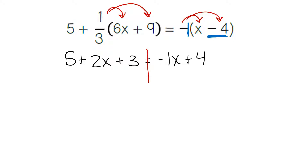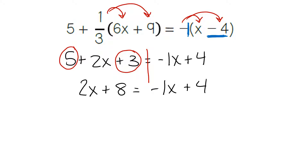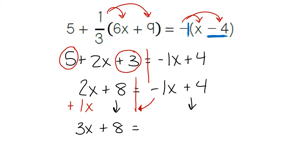Now combining like terms on the left-hand side: I can combine the 5 and the 3 because they do not have a variable. 5 plus 3 is 8. There are no like terms to combine on the right-hand side — negative 1x and 4 are not like terms. So we can go straight into combining like terms on opposite sides. 2x is on the left, negative 1x is on the right. To move the negative 1x over, we do the opposite operation — we do a plus 1x. 2 plus 1 gives us 3. We bring down the plus 8 and the 4.